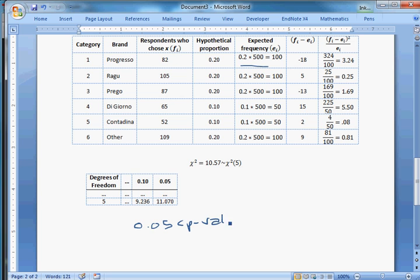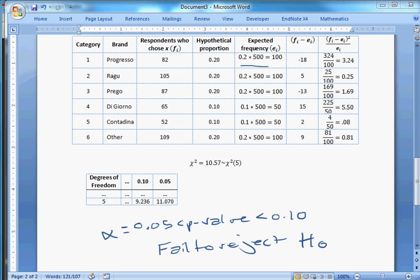We can write that 0.05 is less than our p-value is less than 0.10. What does this mean? If alpha was 0.05, which I probably should have picked earlier, then we would fail to reject the null. Despite the fact that our data doesn't exactly match our hypothetical proportions, it's not so far away that we can reject that the hypothetical proportion represents the true population values.